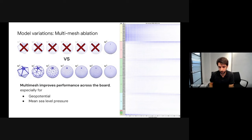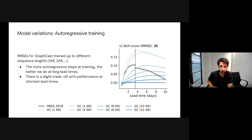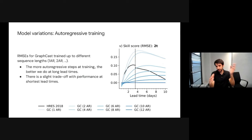Ablations on autoregressive training show a trade-off: the model trained with only one autoregressive step is the best at short lead times. As we increase training steps, we shift the performance curve — doing better at longer lead times at the cost of doing slightly worse at shorter lead times.